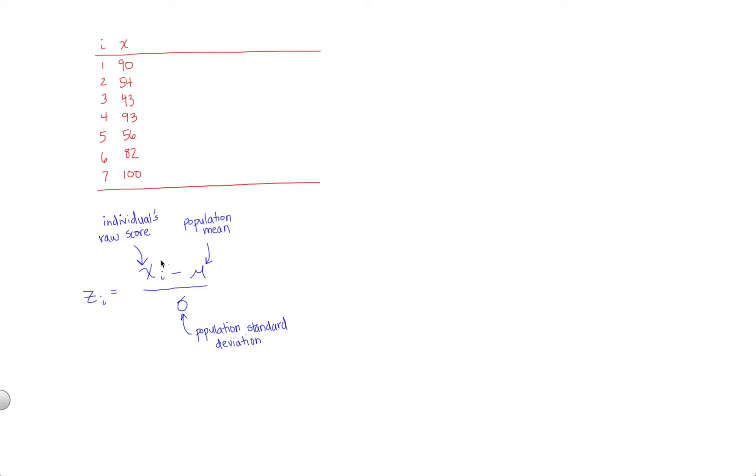We're going to transform an individual's raw score, x sub i, into a z-score, a standardized score. We do that by taking their raw score, subtracting the population mean, and dividing by population standard deviation.